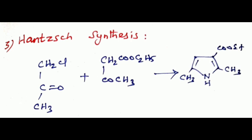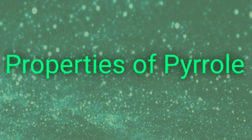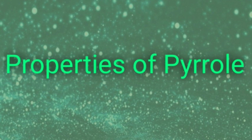Next we will discuss properties of pyrrole. Pyrrole is a colorless liquid. Its resonance energy is about 31 kilocalories per mole and its dipole moment is 1.80 Debye. It is an aromatic compound, therefore it obeys Huckel's rule, that is 4n plus 2 pi electron rule. The lone pair of electrons are involved in delocalization of pi electrons inside the ring. It gives bright red color with pine splinter moistened with concentrated hydrochloric acid. Pyrrole is both a weak base and weak acid.